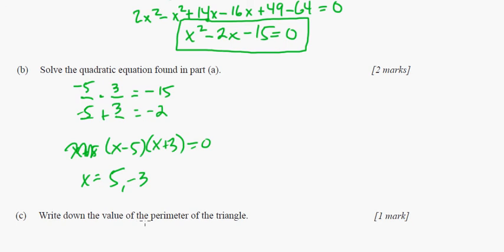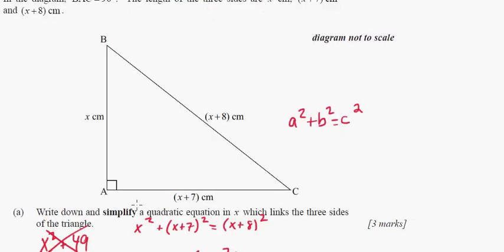And then so the last part here, this is only a 6 mark problem. It says write down the value of the perimeter. Well, when we were talking about distance, you can only use the positive one. So we're going to use 5 here. So I'm going to go back to the original triangle here, and I'm going to sub in 5 for everything. So this is going to be 5, that will be 5+8 is 13, and 5+7 is 12. So, and if you know anything about Pythagorean triples, 5, 12, 13 is a very common one. So we know we did it right.